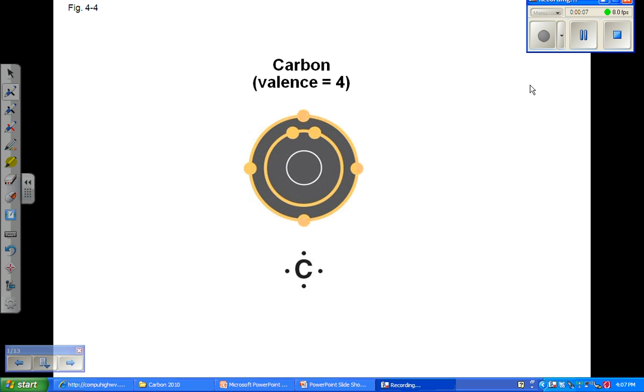The key to an atom's chemical characteristics is its electron configuration. Carbon has six electrons, two in the first electron shell and four in the second electron shell.